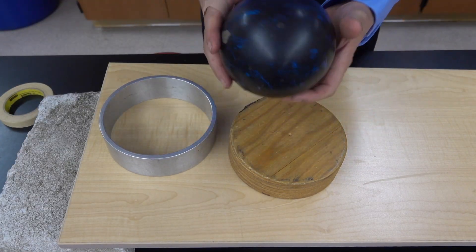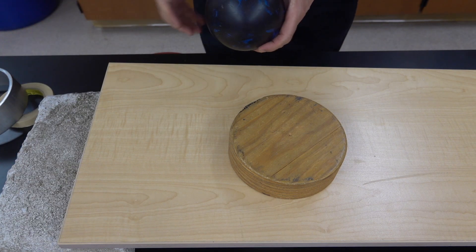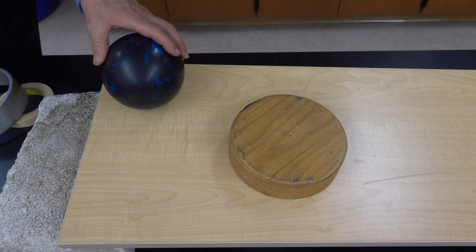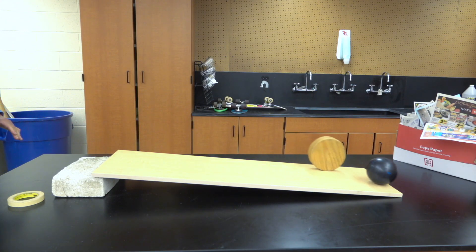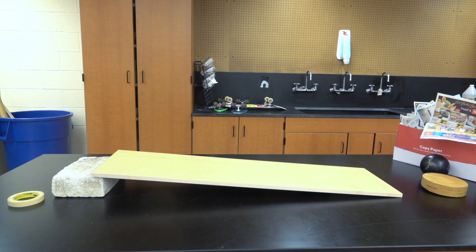After observing that the solid cylinder rolls faster, it's then usually rolled against a solid ball. And here we find that the ball is actually faster than the cylinder.